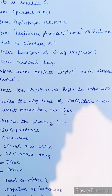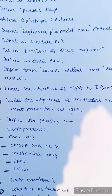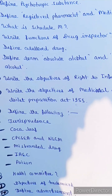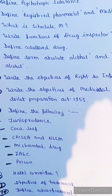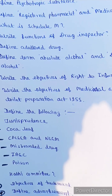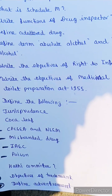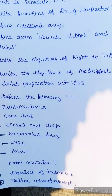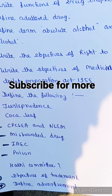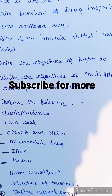Read the objectives of the Medicinal and Toilet Preparations Act 1955. Define the following terms: jurisprudence, coca leaves, CP, CSEA, NLE-M full form, misbranded drugs, IAEC full form, poison. Define Hathi Committee. What are the objectives of trademark? Define advertisement.